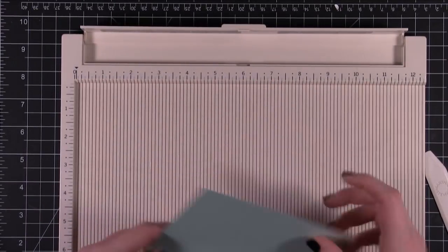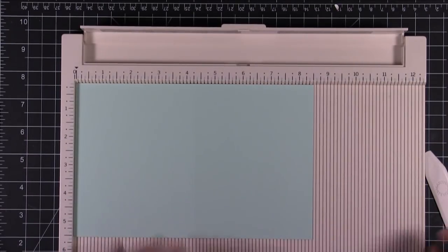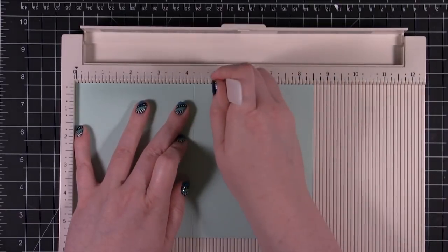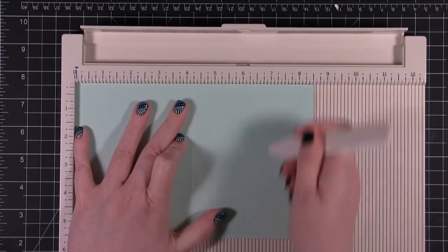Now if you want to do some other types of decorative scoring lines you can definitely do that. I'm going to come over here and I'll have it every 3 quarters of an inch. I can go like this.